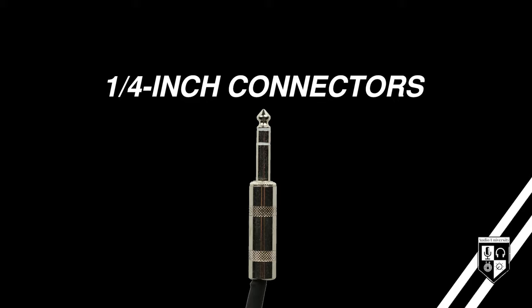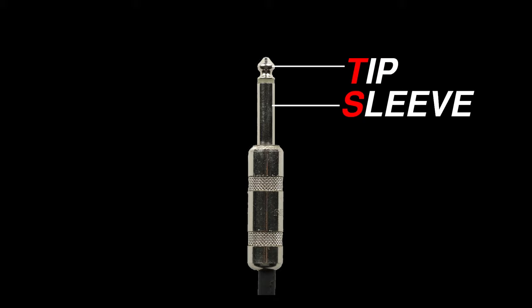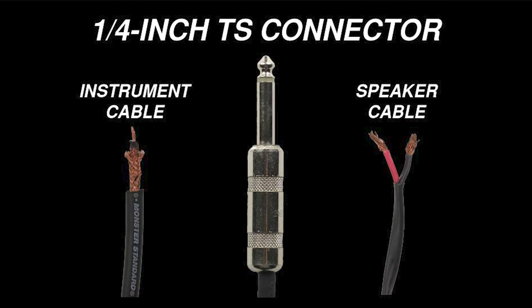Now let's talk about quarter-inch connectors. There are a few different types. The type of signal that a quarter-inch connector can transmit will be determined by the amount of connection points on the connector itself and the amount of connection points on the cable being used. A quarter-inch TS connector consists of two parts: a tip and a sleeve. The most common use for a quarter-inch TS connector is an instrument cable or a speaker cable. Although these cables look identical from the outside, the main difference is the type of cable being used.